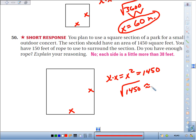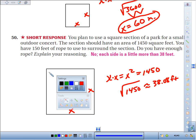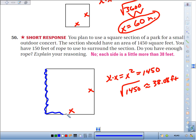And if you do that using your calculator, you get about 38.08 feet. Now, you've got rope that you're putting around this whole thing, and your goal is to rope the whole thing off.